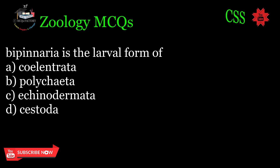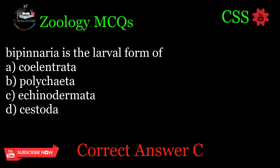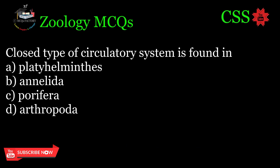Bipinnaria is the larval form of: A. Coelentrata, B. Polychaeta, C. Echinodermata, D. Cestida. Correct answer: C.